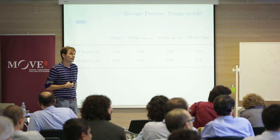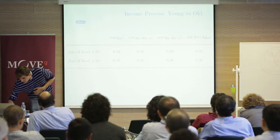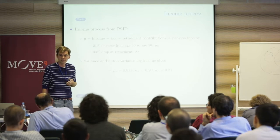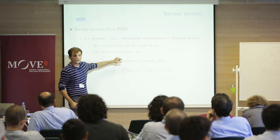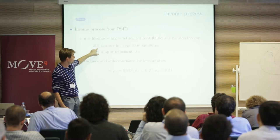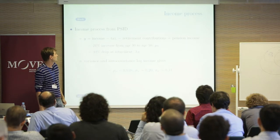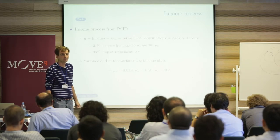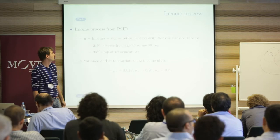An important issue: the initial draw of the persistent income component from the stationary distribution of a near-unit-root process means income variance grows over time mechanically. The variance of income at age 30 versus age 50 should look very different with a near-unit root, and this is something we need to verify carefully. This is a good point that we should check.